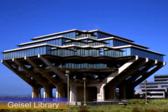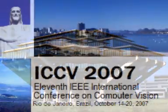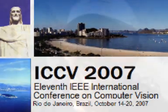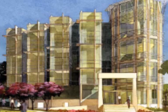A team from UC San Diego took home an honorable mention for the Marr Prize, the best paper award at the International Conference of Computer Vision. The first author on this award-winning paper is Manmohan Chadriker, a Ph.D. student in computer science at UCSD's Jacobs School of Engineering.